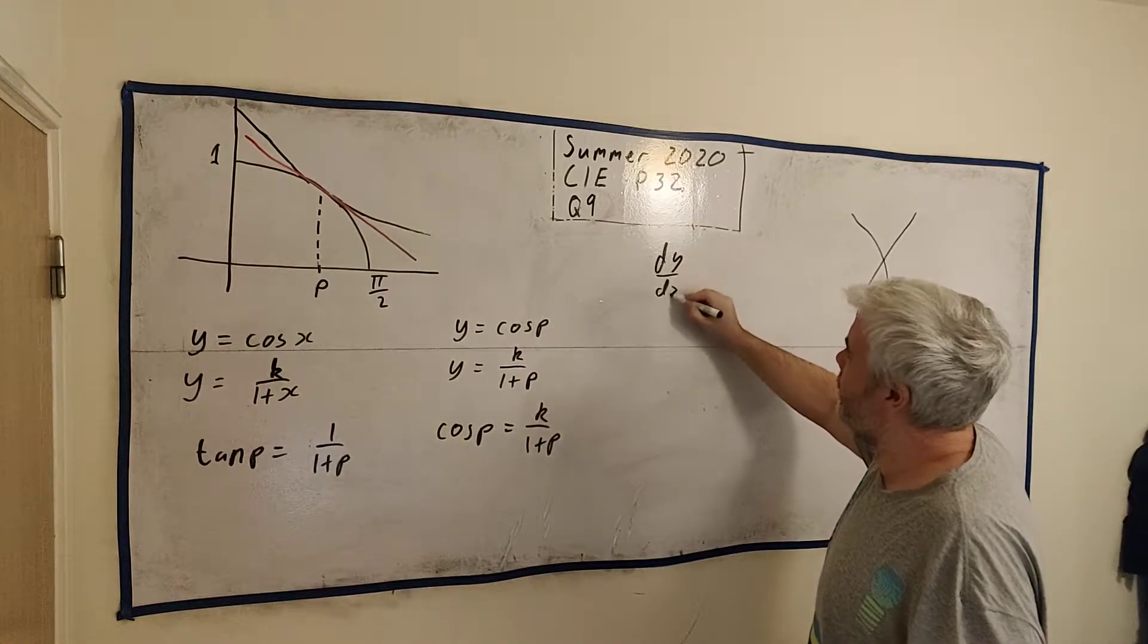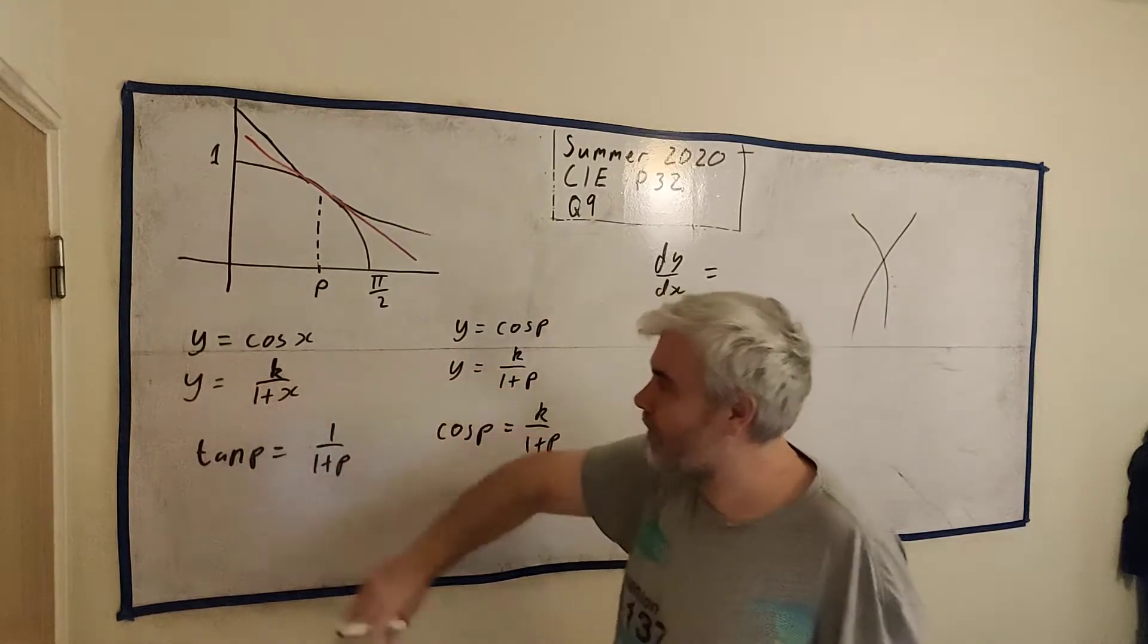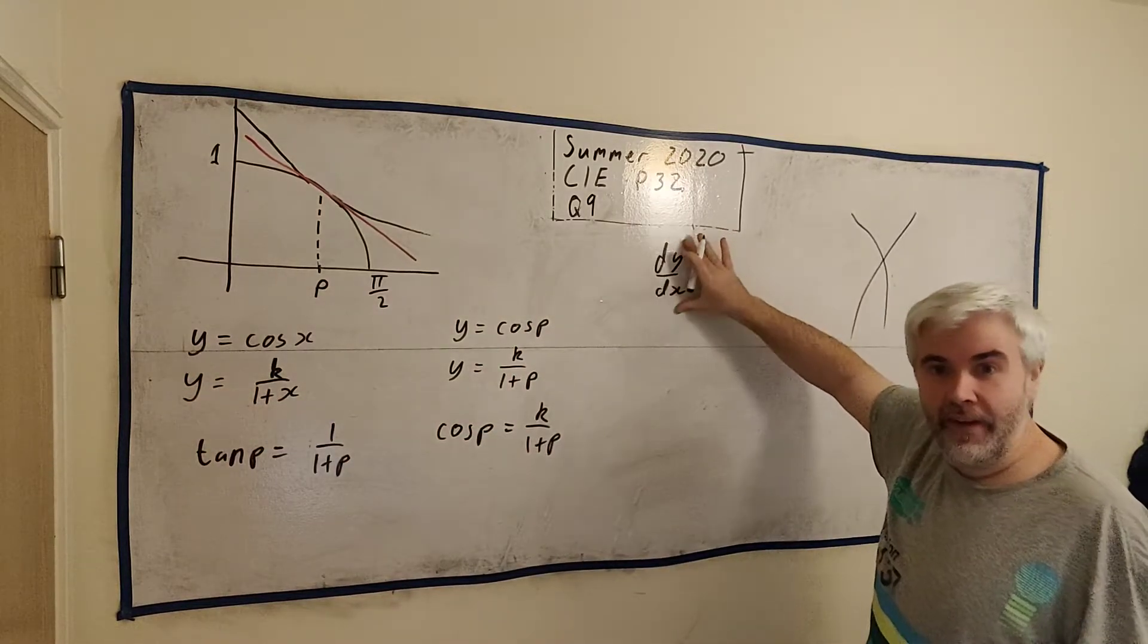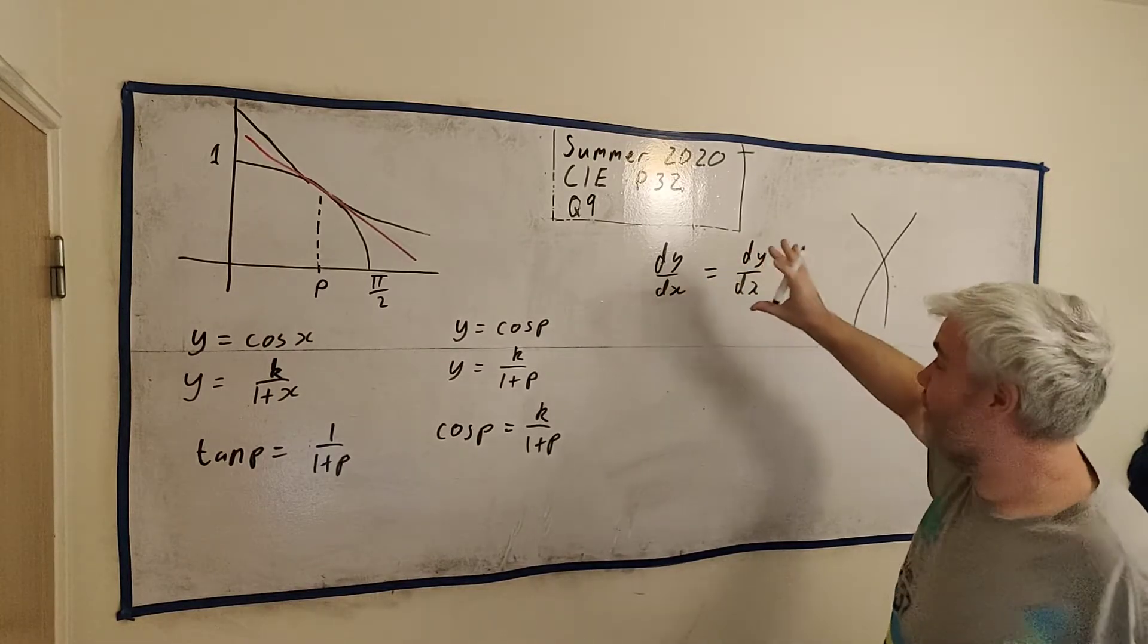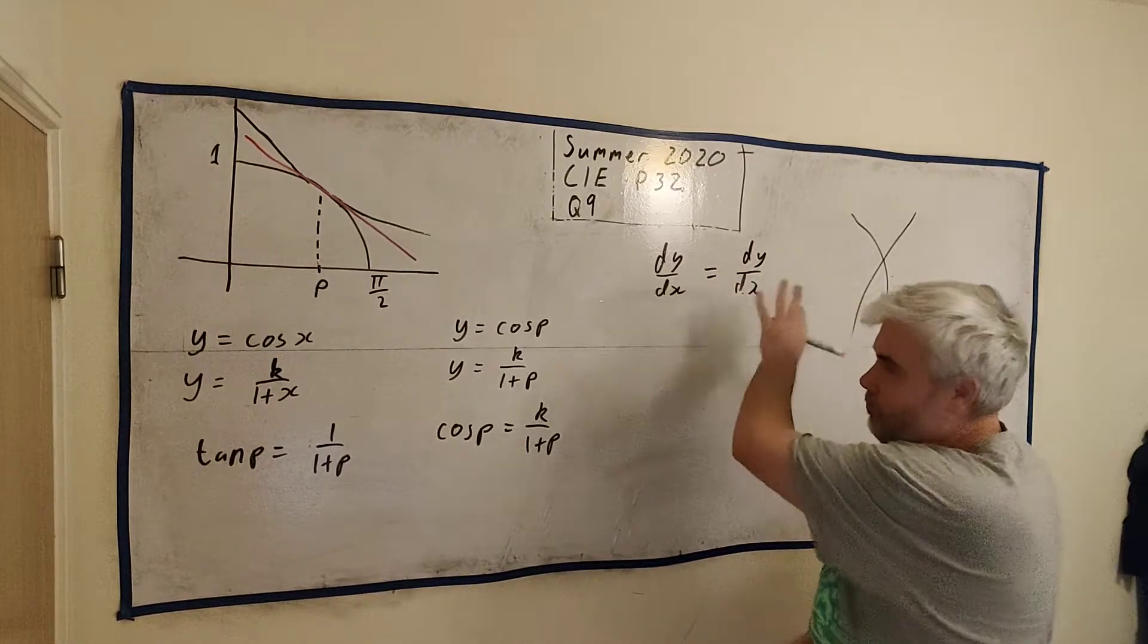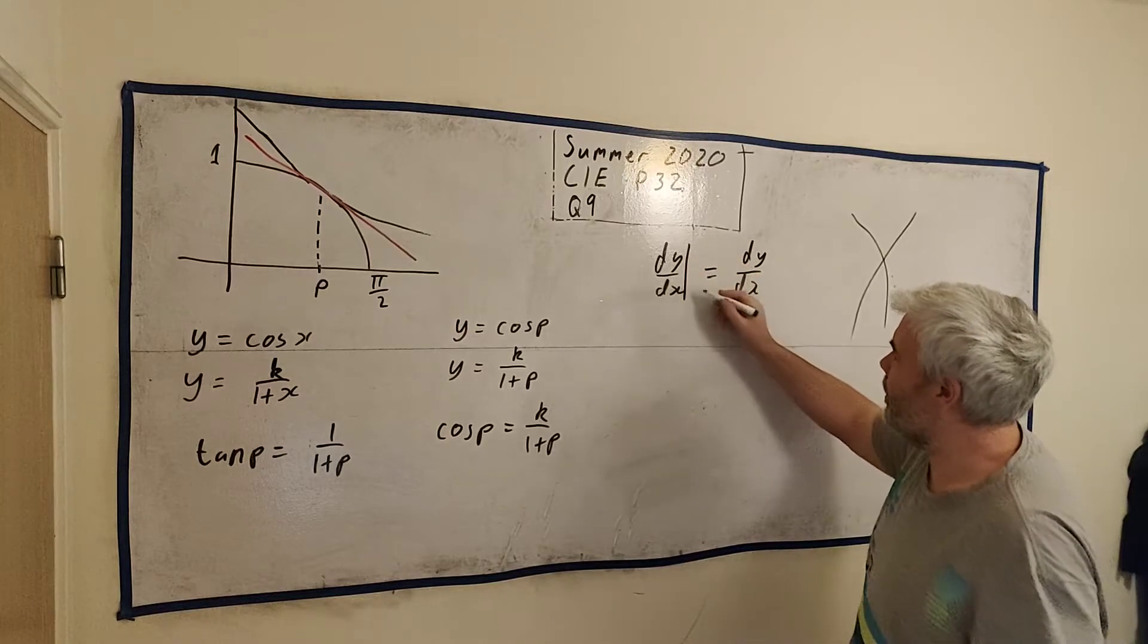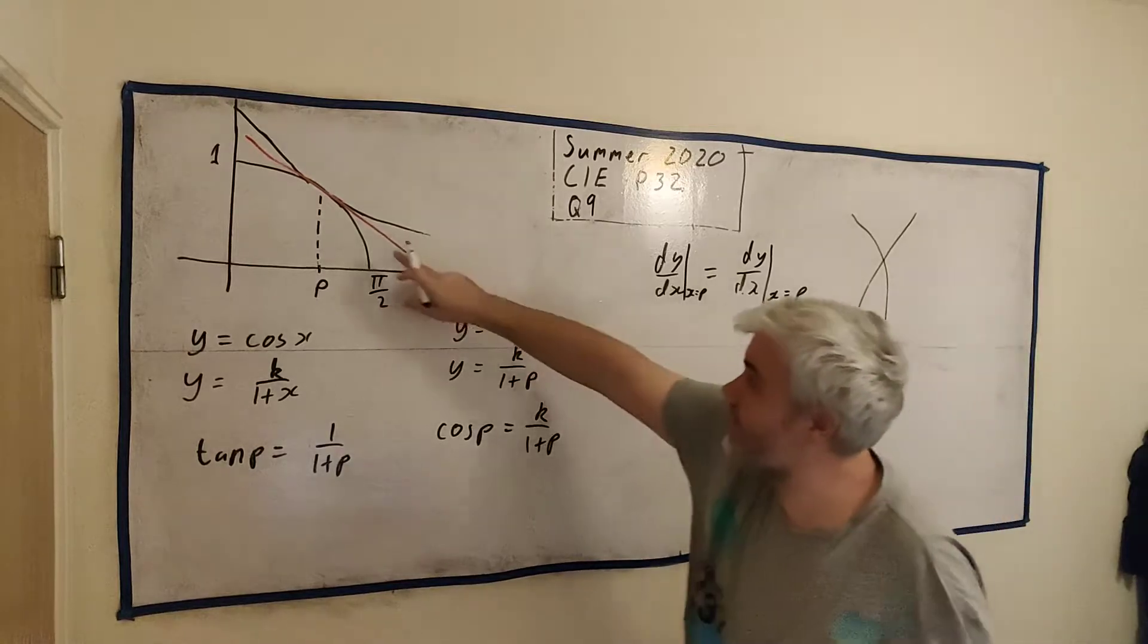Let me just write that. dy dx equals, this is the function fx maybe and this is the function gx. The derivative of fx is equal to the derivative of gx. It looks a bit silly just writing dy dx equals dy dx, but the examiner will understand what you mean. I'm pointing out that the derivative of this one is equal to the derivative of this. At the point p, I should probably put that in, at x equals p. They're not the same here and here. When x equals pi over 2, they're not the same.